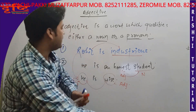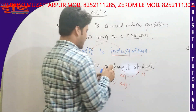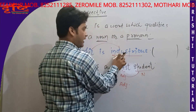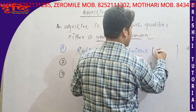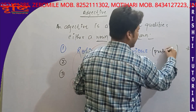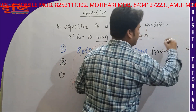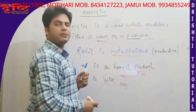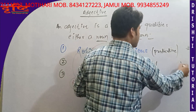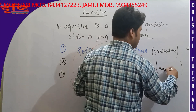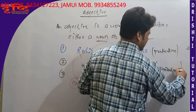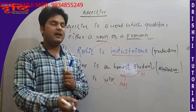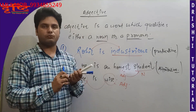Simply ab aap yeh bata do ki yahan pe jo adjective ka usage hai wo kaisa use hai. Agar adjective ke baad koi noun nahi hai, to hum bolte hain predicative use. Aur jahan adjective ke just baad noun ki placement hai, use kehte hain attributive use. Yeh intersection hai to definition mein thodi time lagti hai. Ab start karte hain Rule Number One.